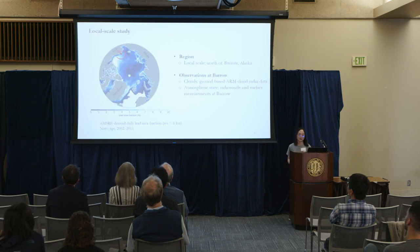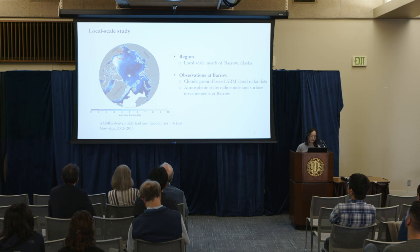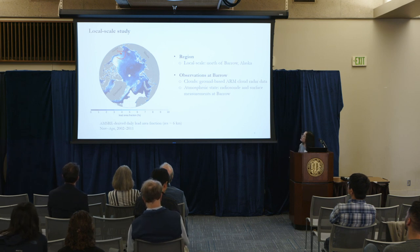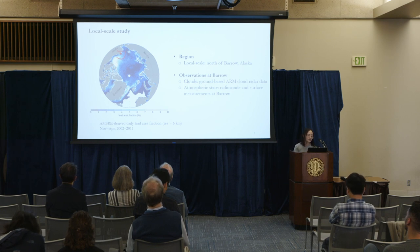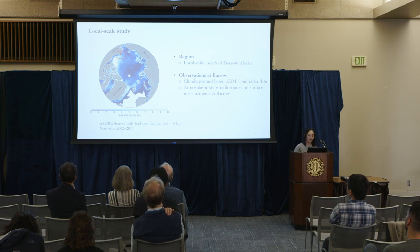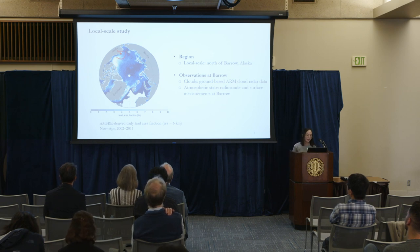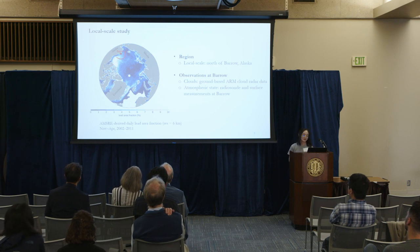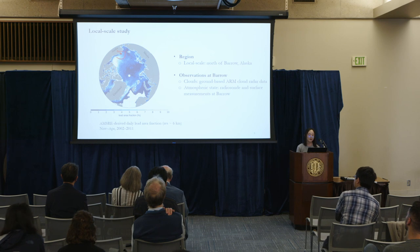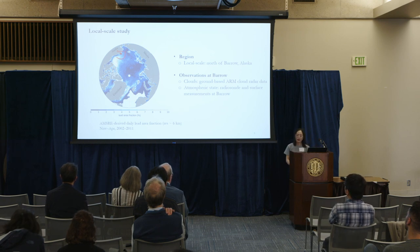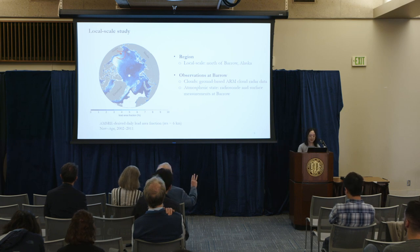We chose to start with a region off the coast of Alaska, roughly within this red curve. A couple of reasons guided this decision. First, as we can see from this map, this region is quite close to one of the hotspots in the Beaufort Sea, so we would expect leads to occur frequently here. Second, we have a very long record of cloud observations at a land site from a ground-based millimeter cloud radar, and we also have very nice regular radiosonde and surface measurements at this land site as well — so that is perfect.